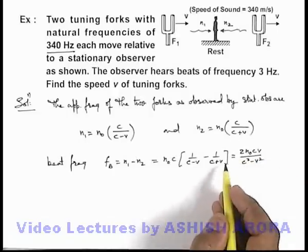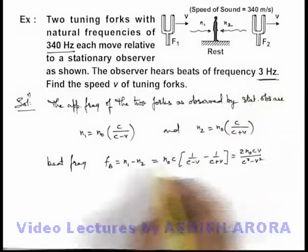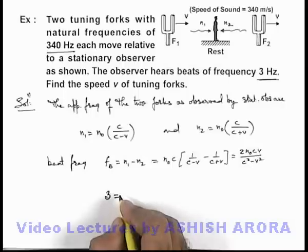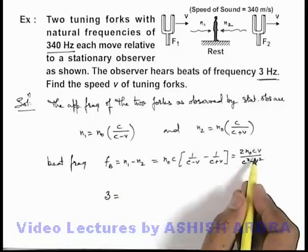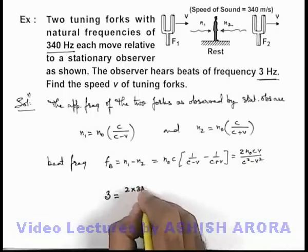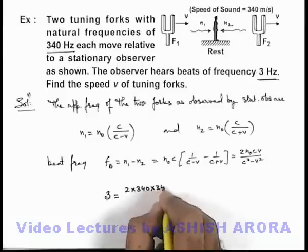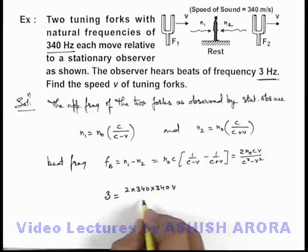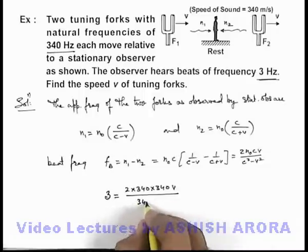We are given that the beat frequency observed is 3 hertz, so this beat frequency can be written as 3. The remaining values we can substitute here, which will be 2 multiplied by 340 into 340 v divided by 340 squared.